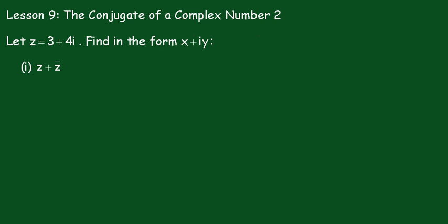Lesson 9: The Conjugate of a Complex Number, Number 2. Let z equal 3 plus 4i. Find in the form x plus iy: (i) z plus z conjugate. Now this is a nice easy one to begin with.